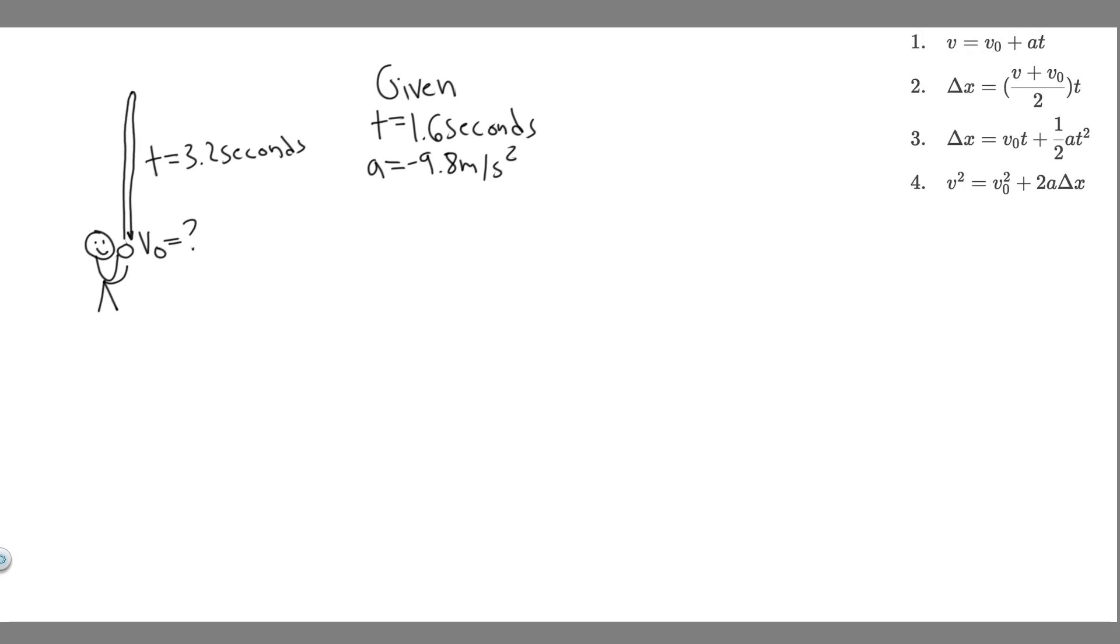Something about objects when they travel this way is that it takes half the time to go up and half the time to go down. So if you know the entire time, you just cut it in half, and that's how long it takes to reach its maximum point. That's just something you have to know about objects when they travel this way.